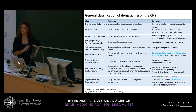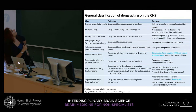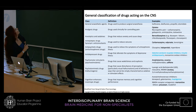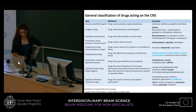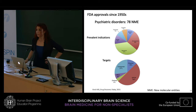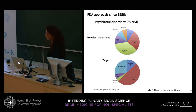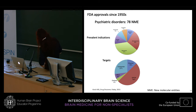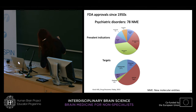We end up with drugs you are likely familiar with — in anesthetics, propofol; analgesics, opiates; antidepressants, selective serotonin reuptake inhibitors (SSRIs) and tricyclic antidepressants; and cognition enhancers such as rivastigmine. Since the 1950s, the FDA has approved only 78 new molecular entities in psychiatric disorders — not many. The prevalent indications were mainly depression, schizophrenia, anxiety, followed by addiction and psychosis, and the main drug targets were GPCRs, GPCR receptors, and transporters.